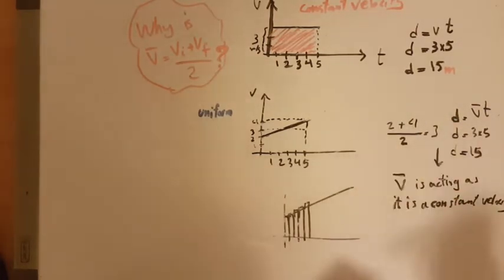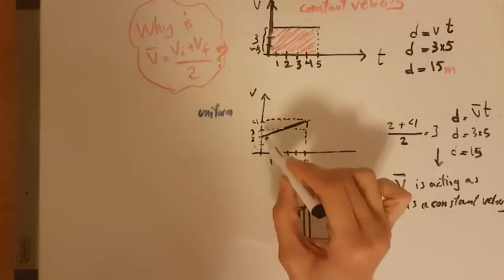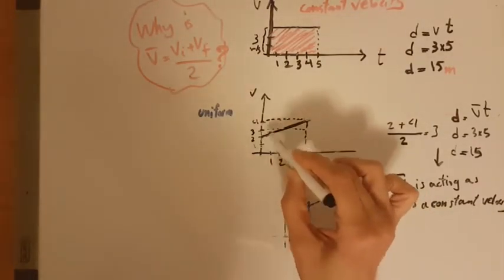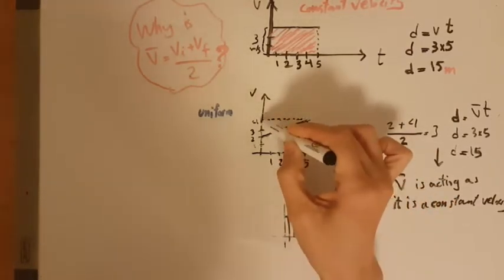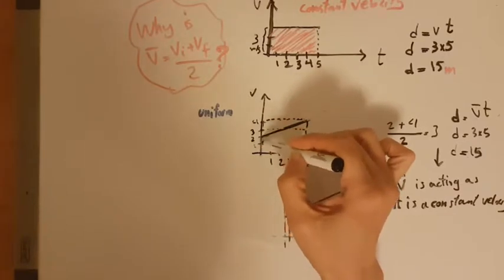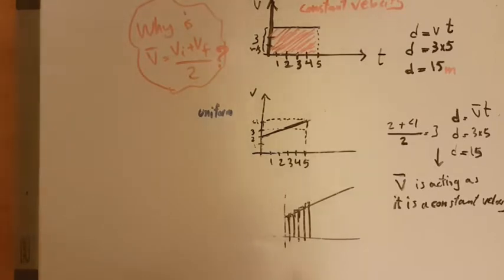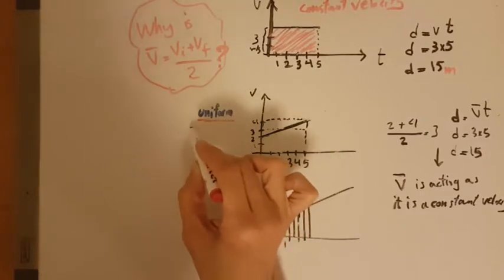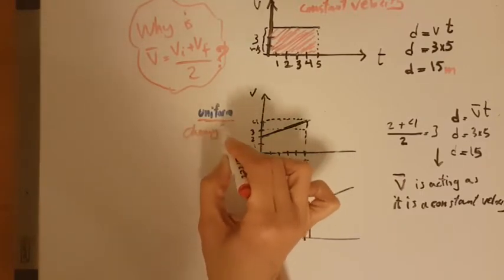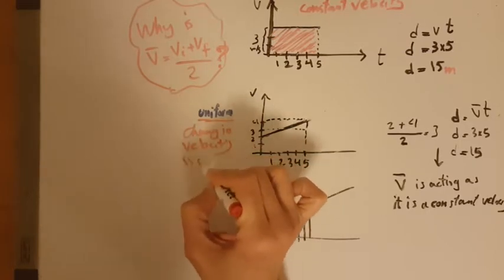So now, look at the situation when the velocity is changing. The velocity starts from 2 and improves to 4 within these 5 seconds. And this velocity changes... The change in velocity is constant.